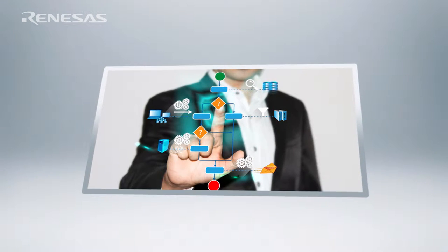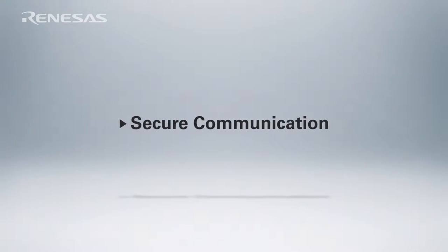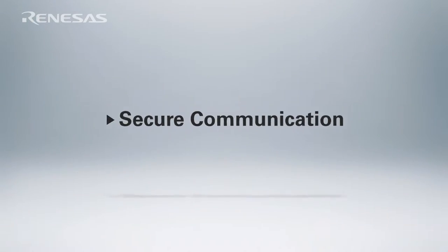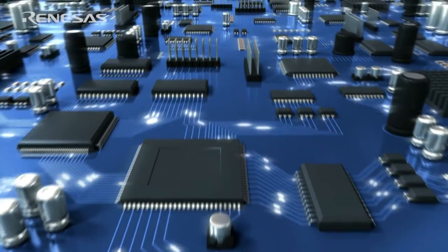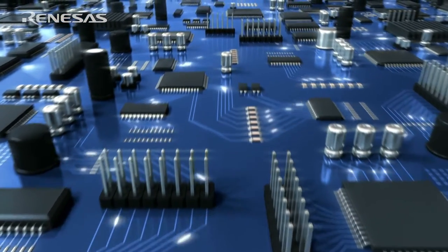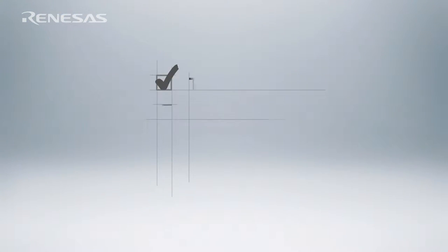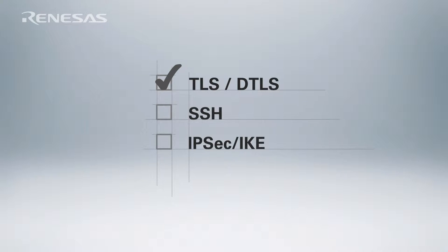In order to control access to our devices, we need to ensure that we've got both secure communication and authentication. Securing communication is really a matter of adding the right protocols to control and encrypt the communication with our device. TLS and its cousin DTLS, or data link TLS, are commonly used protocols in embedded devices. Depending on your use case, other protocols may be appropriate. SSH, IPsec, and IKE are often used in IP networks, and many of the wireless standards have their own communication security protocols.